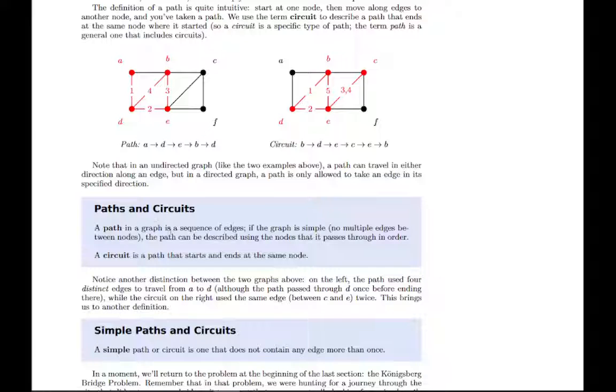So in short, a path is a sequence of edges. You can just describe what edges you're traveling along, and that describes the path that you travel. And then a circuit's just one that starts and ends in the same place.